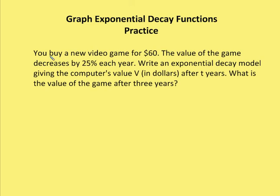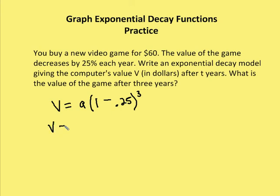Last question: we buy a new video game for $60. The value decreases by 25% each year. Write an exponential decay model giving the value V in dollars after T years, and find the value after three years. The model is: ending value = A·(1 − r)^t, where decay uses minus and growth uses plus. So V = 60·(1 − 0.25)^3.